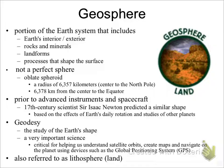The geosphere is the Earth itself — all of the physical features of the planet except water. It is the portion of Earth's system that includes Earth's interior and exterior, rocks and minerals, landforms, and the processes that shape the surface. It is not a perfect sphere; rather, it is an oblate spheroid, similar to the shape of a football.